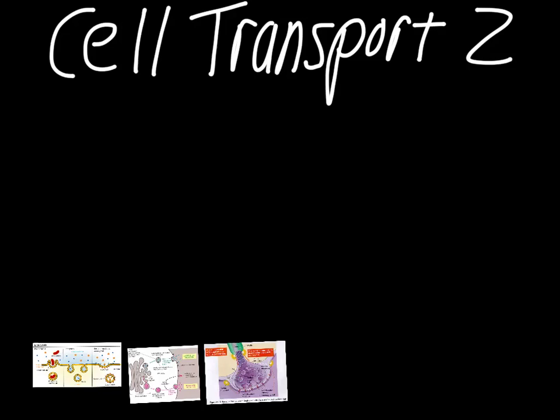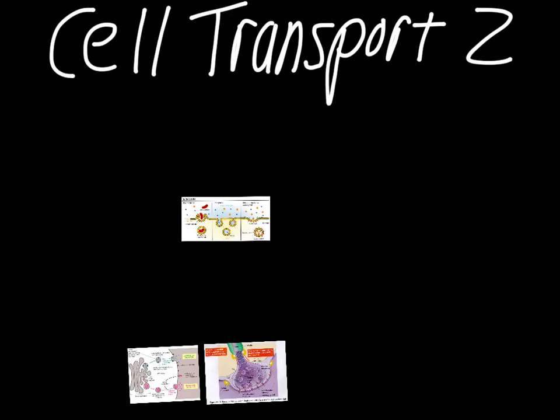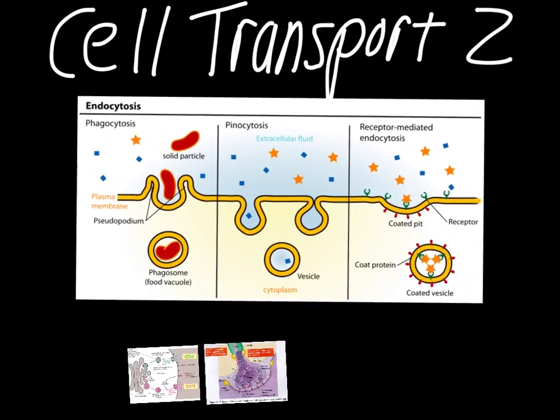This video is about cell transport. In the last video on cell transport, we talked about how things go in and out of the cell through proteins. The problem is, some things are too big to go in or out of the cell through a protein. In that case, it ends up going directly through the cell membrane.